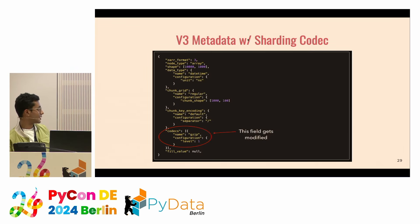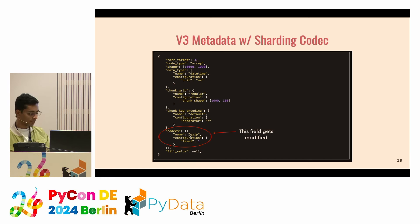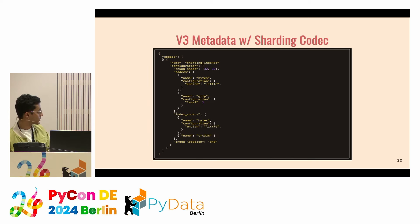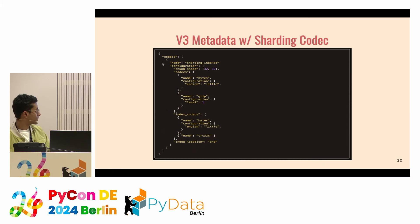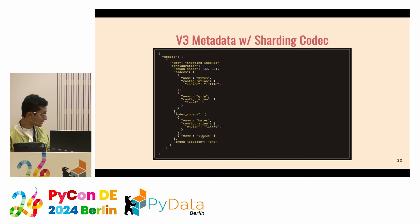Here's an example of how sharding looks in the metadata. In the general metadata, the codecs field — which was initially gzip — gets modified once sharding is enabled. The sharding codec expands that field to include the sharding index, the chunk shape, the codecs, and everything else. There's also a CRC32C checksum, which validates the integrity of individual shards.